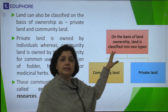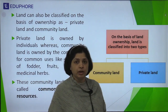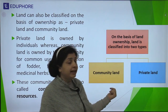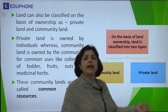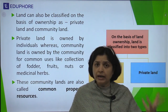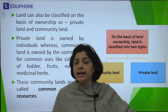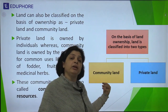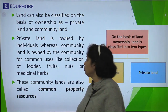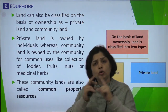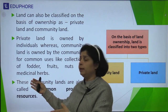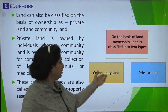Land can also be classified on the basis of ownership. There are two types: community land, also called common property land, and private land. Private land is owned by individuals — only the owner has the sole right to use it. Community land, on the other hand, has resources that are common property. The community living in that area can all use it — fruits, nuts, fodder, and medicinal herbs from this common property land can be used by all.